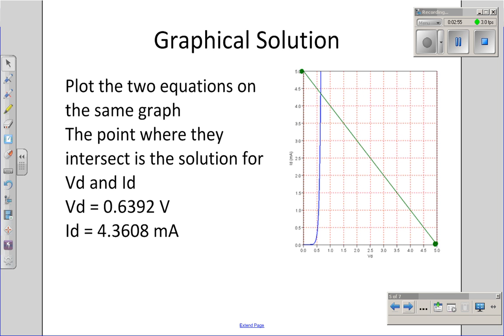If I look right, I get the diode equation, the exponential. That gives me the current being a function of voltage, as shown by the blue line. The intersection, right here, is your solution. For that circuit, the voltage is going to be 0.6392 volts and the current 4.36 milliamps.